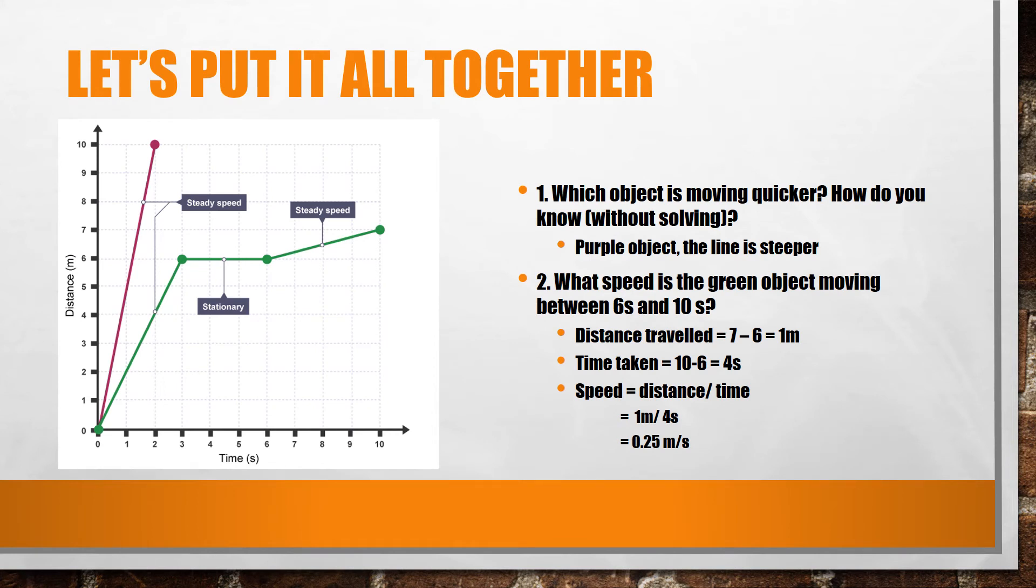If we put everything we just learned together, we can answer many different questions, such as, which of the two objects is moving quicker, and how do you know without solving? In this case, we have a purple and a green object. The purple line is far steeper than any point on the green line, so we can say that the purple object is traveling quicker.